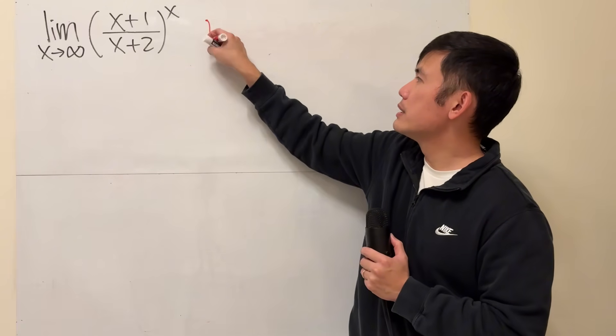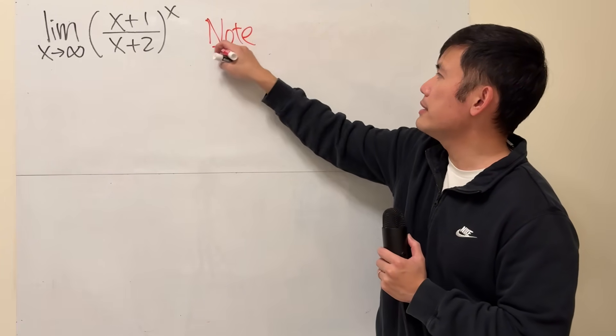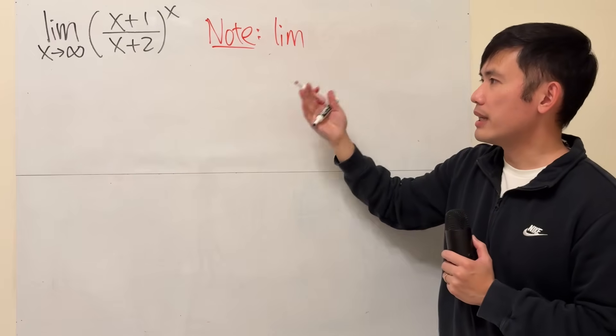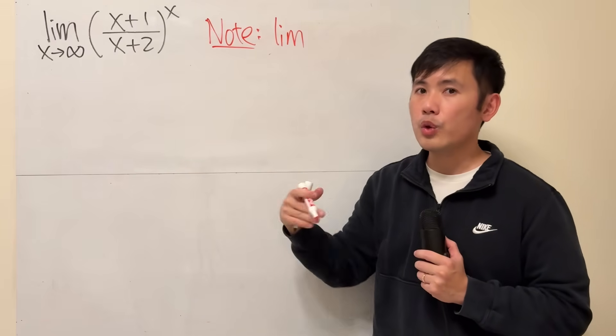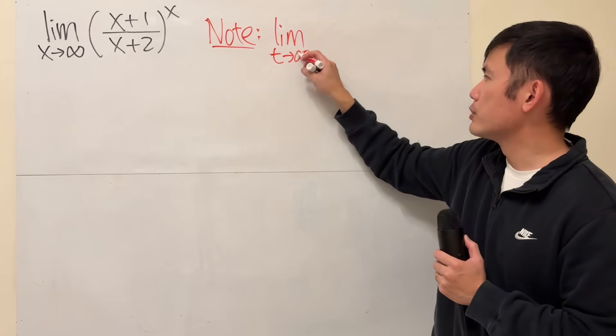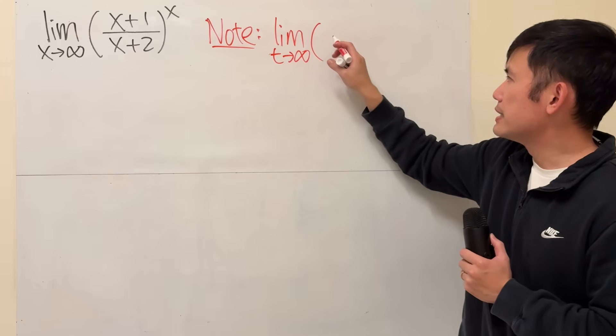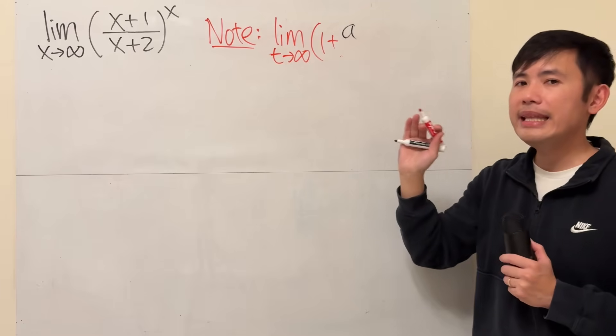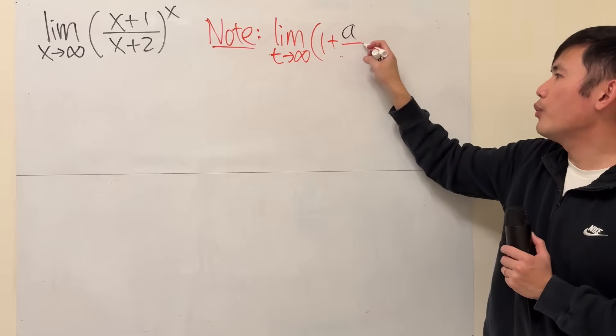We are going to use the note that you provide, which is the limit. Right here, let me use another variable, because later on we will be doing a substitution. So let me use t, approaching infinity. If the expression is 1 plus some number a, a can be any real number, and then over t.